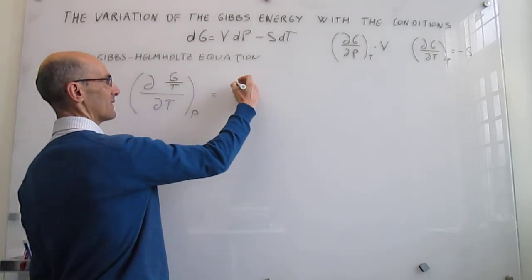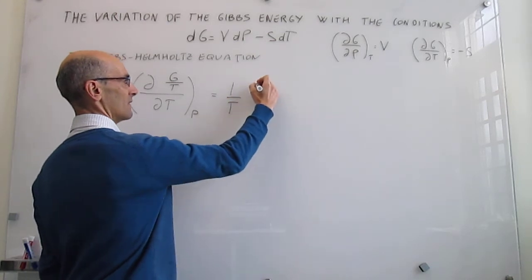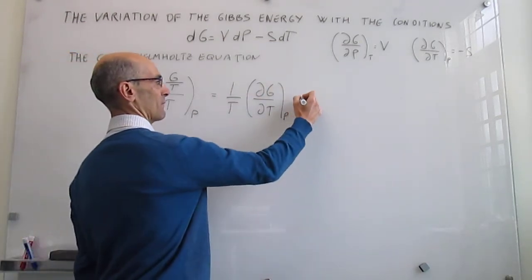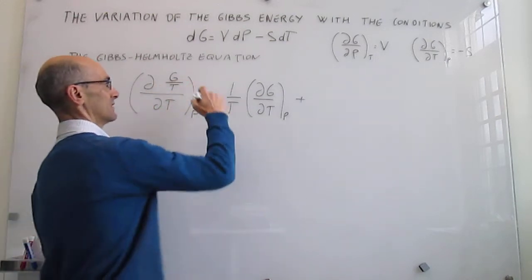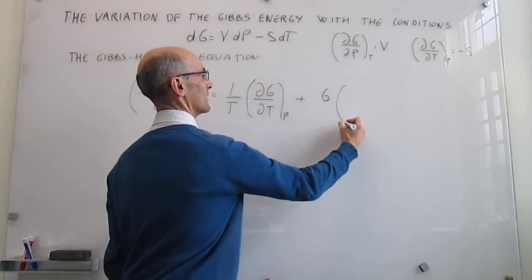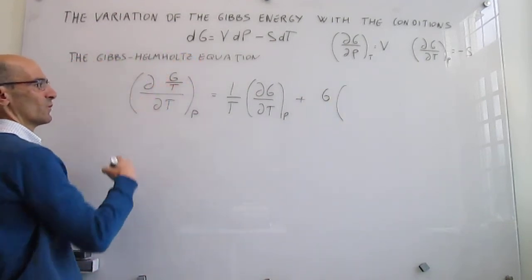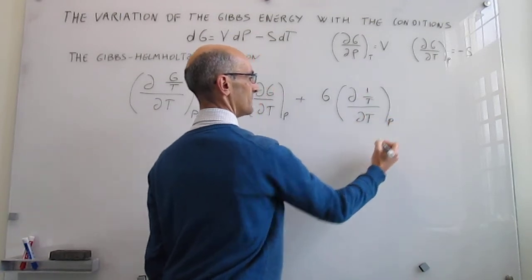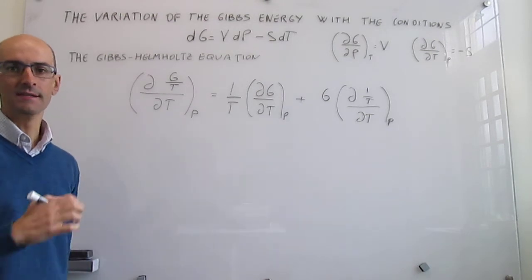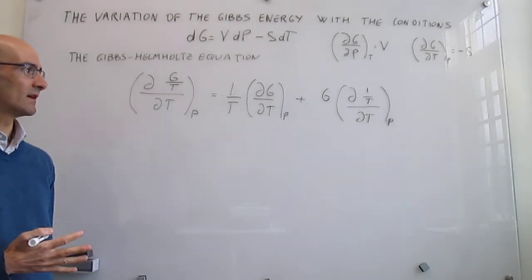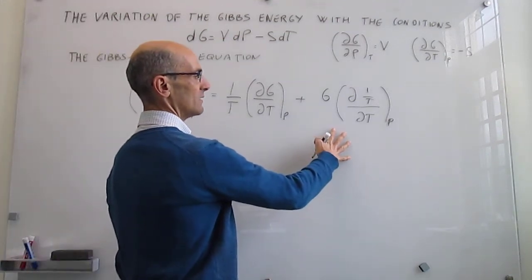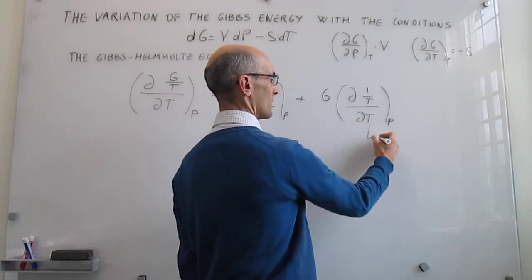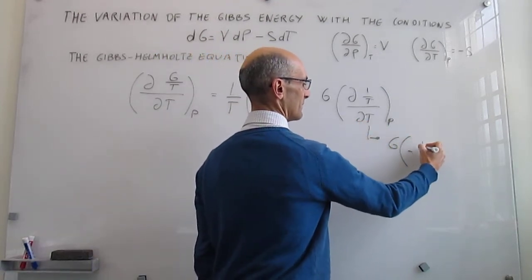The first derivative using the product rule will be: the derivative of the Gibbs energy with respect to temperature at constant pressure, multiplied by 1/T, plus G multiplied by the derivative of 1/T with respect to T at constant pressure. I'm going to be dropping the constant pressure subscripts just for convenience. The derivative of 1/T with respect to T is simply minus 1/T², so we can write that term as G multiplied by minus 1/T².